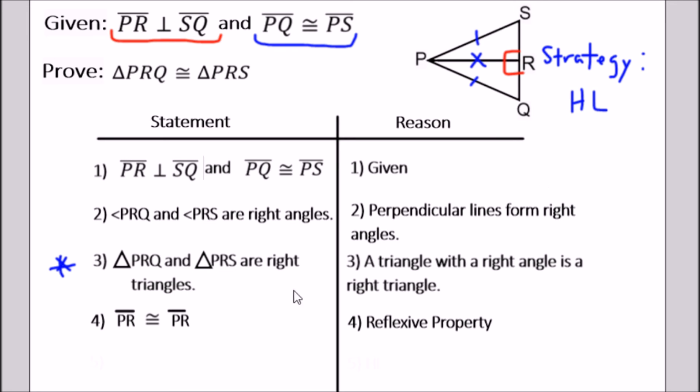A common mistake I've seen is that instead of saying statement three, students will say angle PRQ is congruent to angle PRS because all right angles are congruent. You don't have to establish any pairs of congruent angles when using hypotenuse-leg, but you absolutely have to establish the triangles as right triangles.